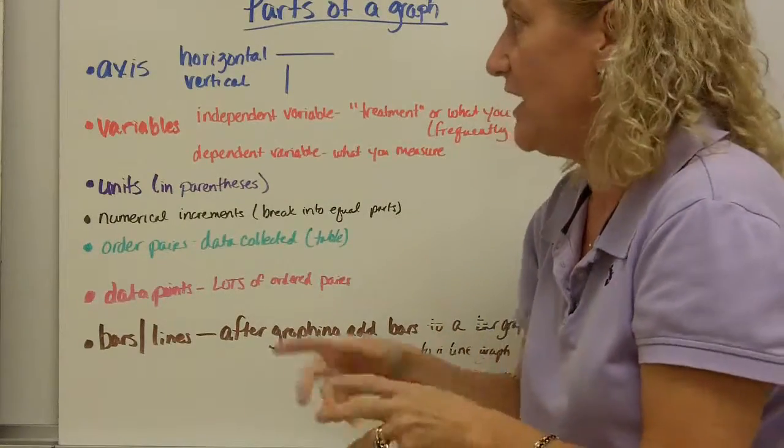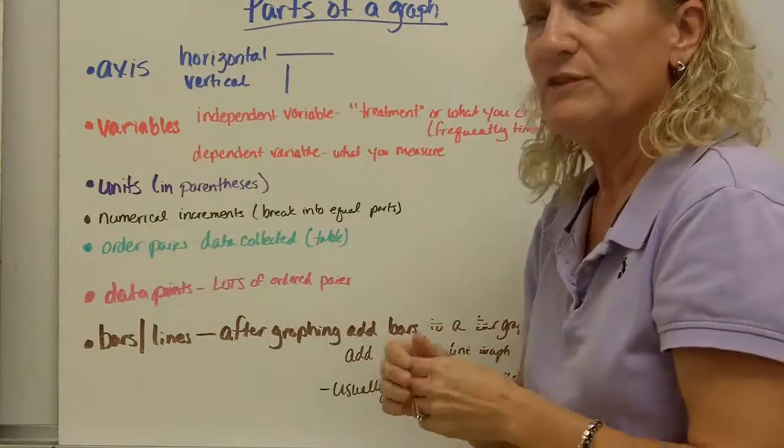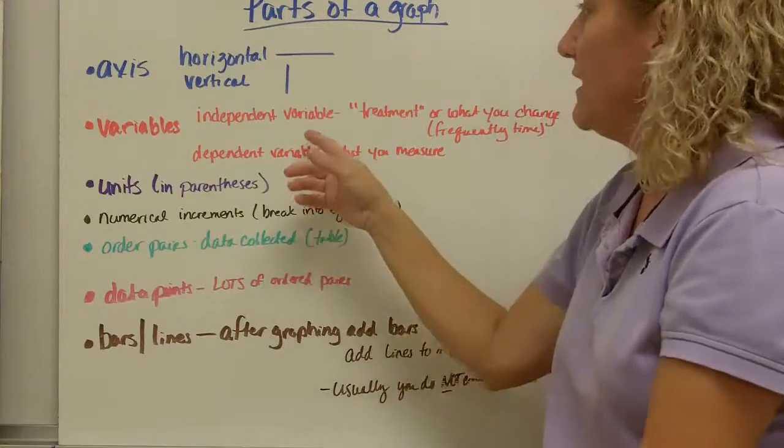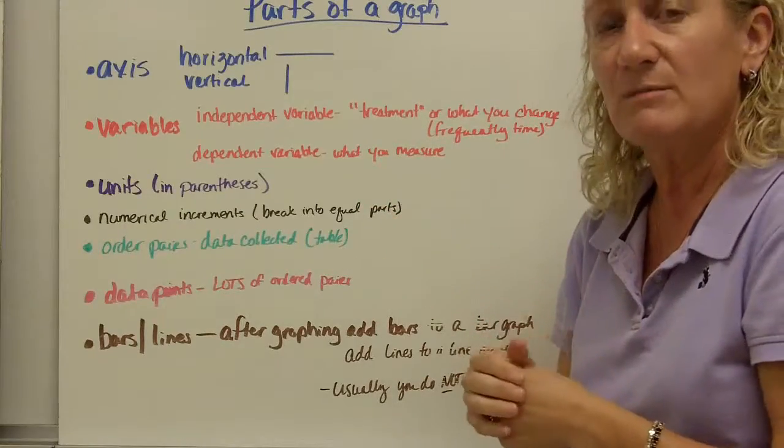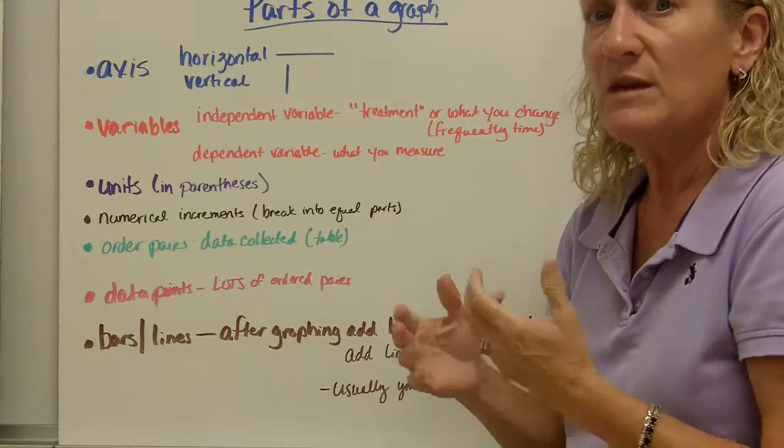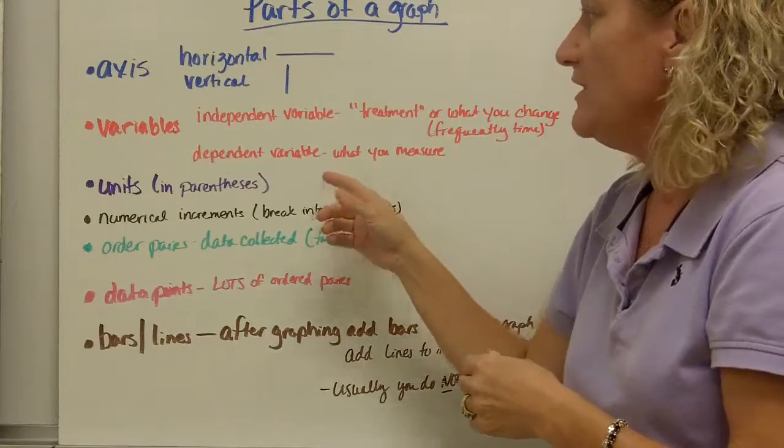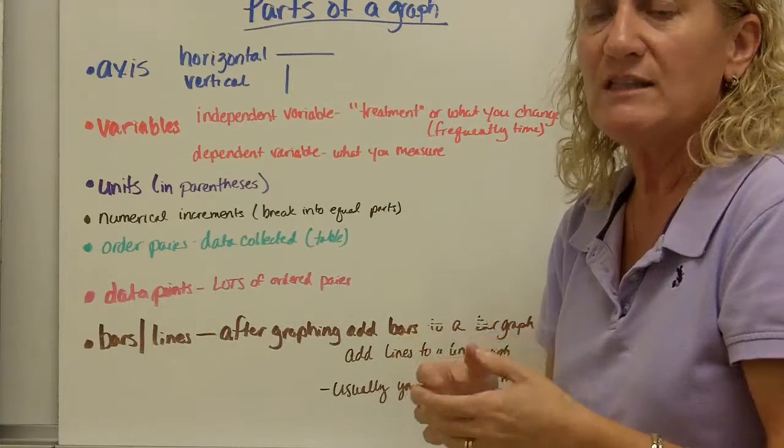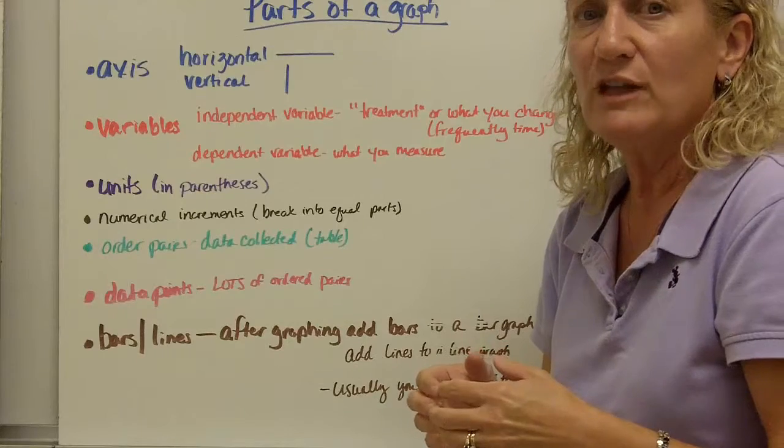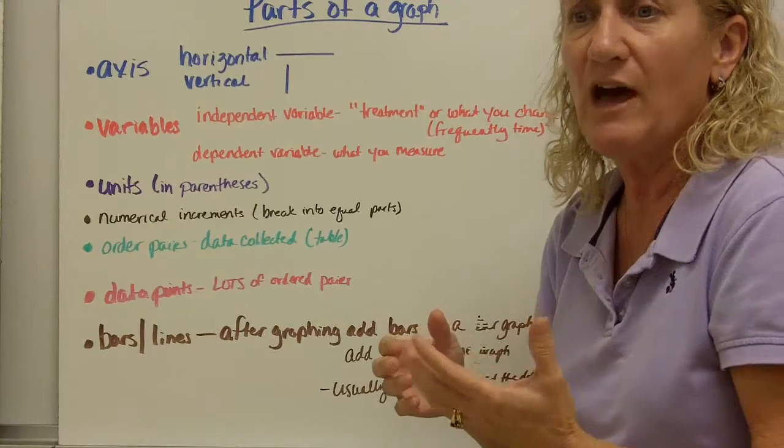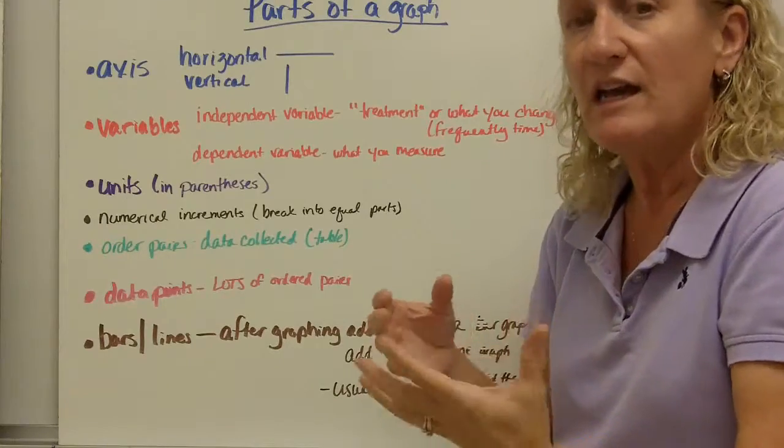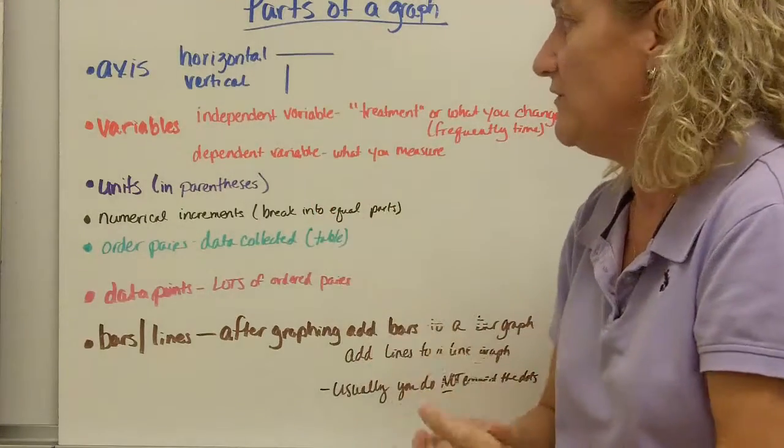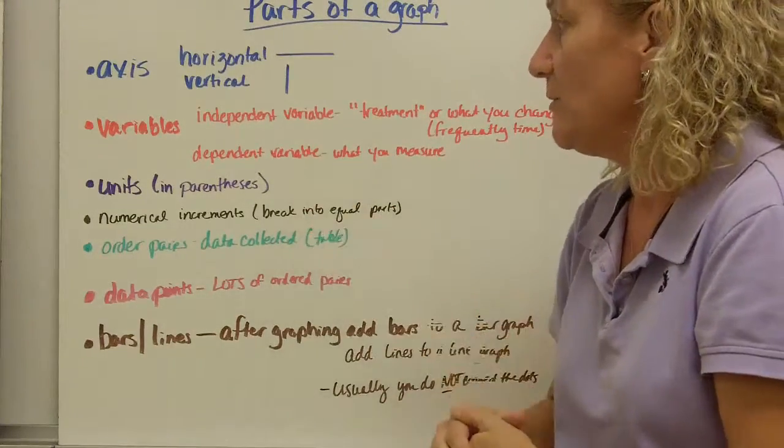There are two kinds of variables that we're going to focus on. One is the independent variable. It's the treatment or what you change. And again, sometimes that's time. Sometimes it's not, but sometimes that's time. And the dependent variable is what you measure. So if I'm testing whether a certain product will increase the health of my tomato plants and I'm actually measuring the height of the tomato plants, that would be my dependent variable. Again, units are in parentheses.